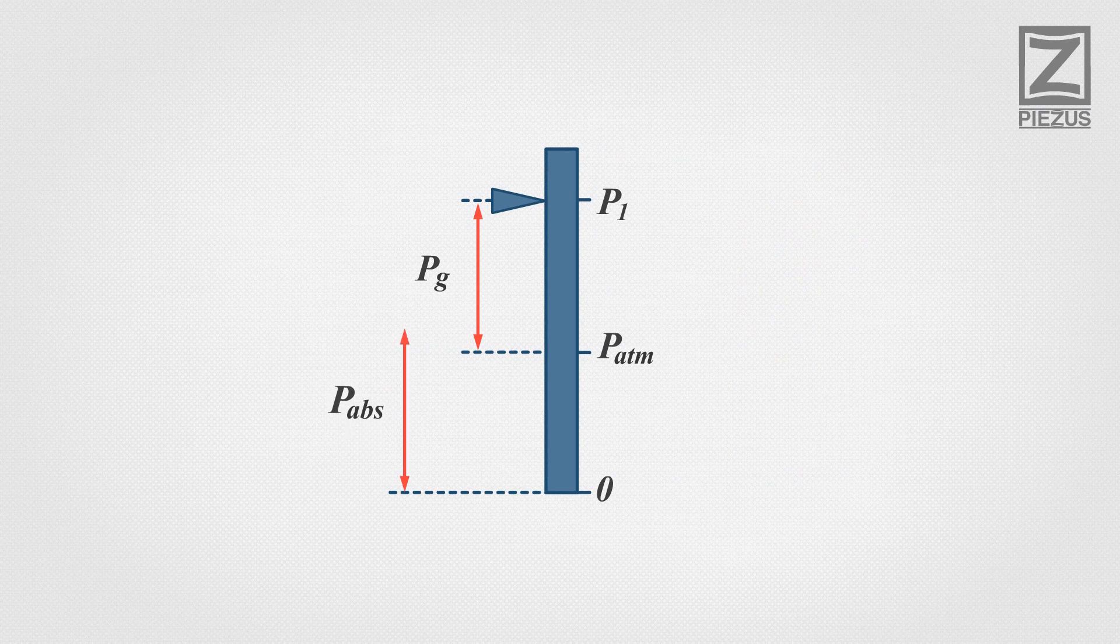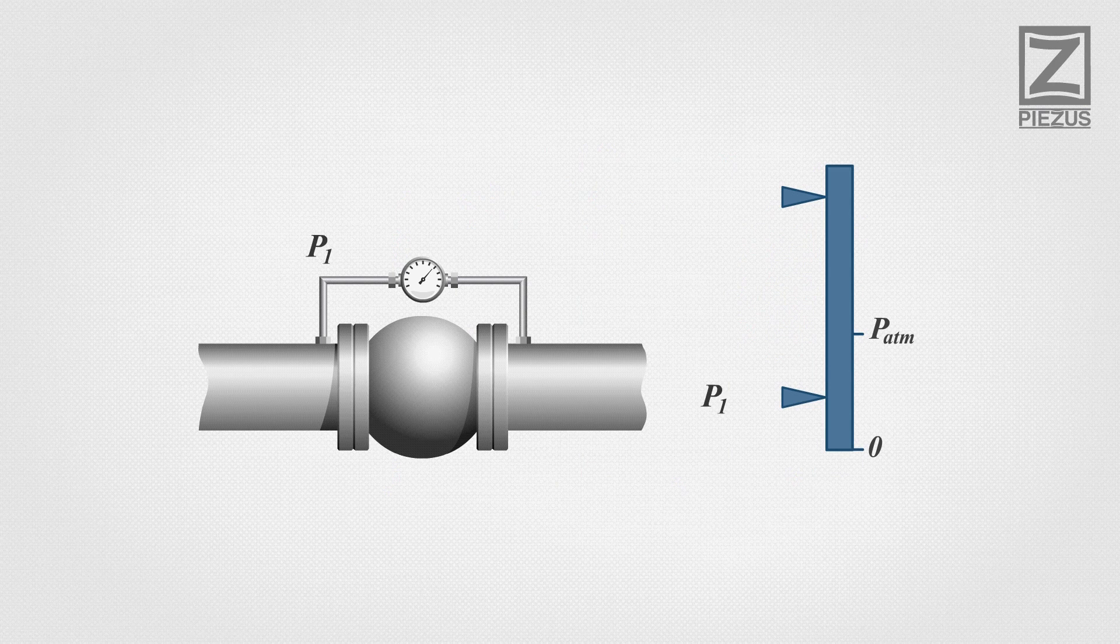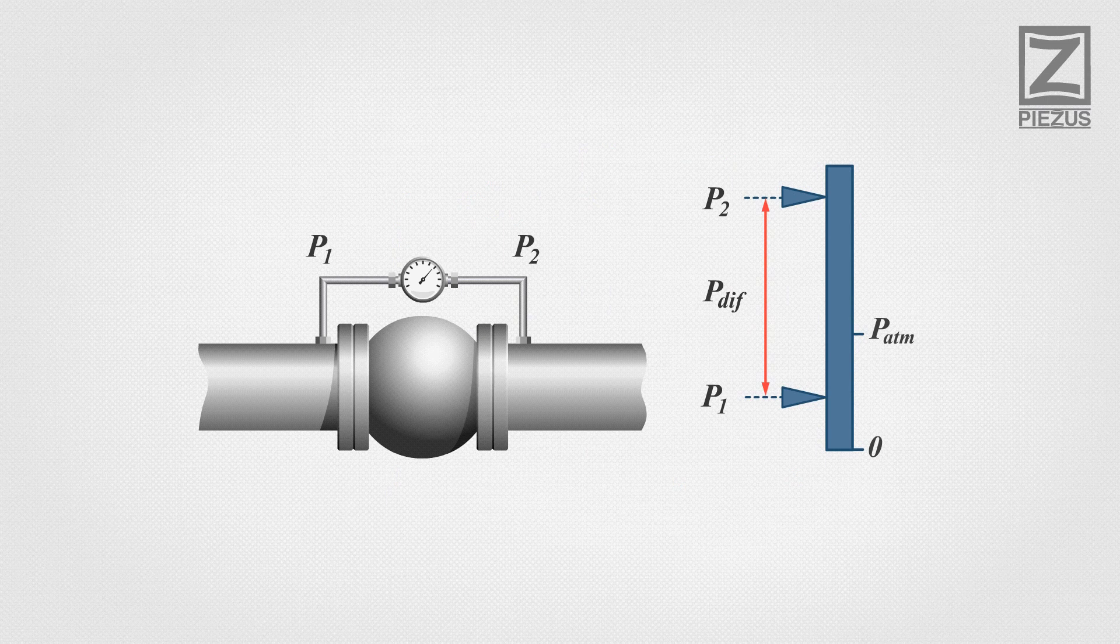Absolute pressure is zero referenced against a perfect vacuum. Differential pressure is the difference in pressure between two points, such as two sides of a filter.